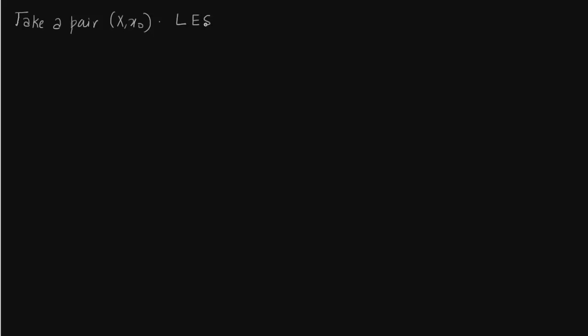Here I want to talk about this x-comma-point notation. This was used in the previous slide when we proved the equivalence of reduced homology of a good pair and of X modulo A. So you take a pair X comma x₀ and try to construct a long exact sequence of it. Let's write the long exact sequence of this pair.